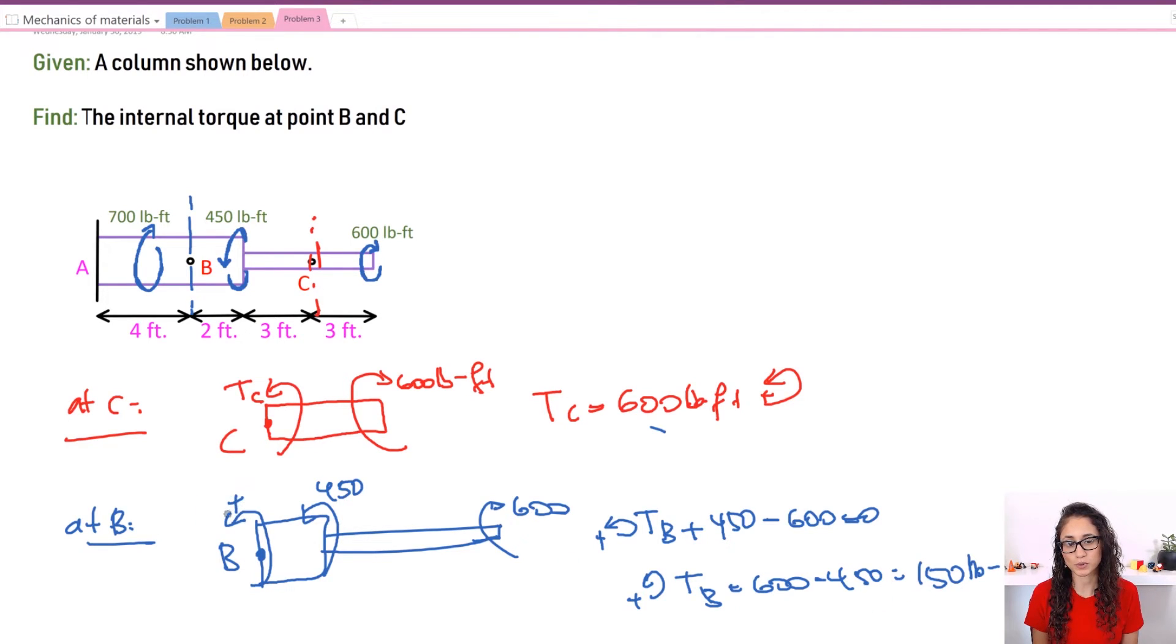So this is going to be 150, but think about it guys. I want you to visualize it so that way it's easier. So I have 450 going this way and I have 150 going this way, that's equal to 600, and I have 600 going the other way. Perfect, we have equilibrium.